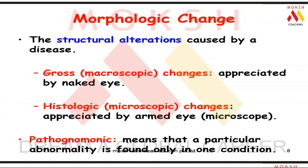Pathogenesis is the sequence of events — the story from etiology to symptoms and signs. Morphological changes are the structural alterations caused by a disease. There are two levels: macroscopic changes, which I can see with the gross naked eye (for example, a liver not looking normal without a microscope), and microscopic changes, which require a biopsy section examined under the microscope.